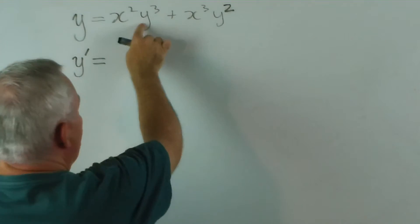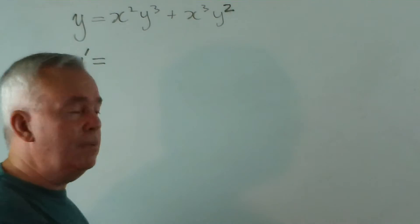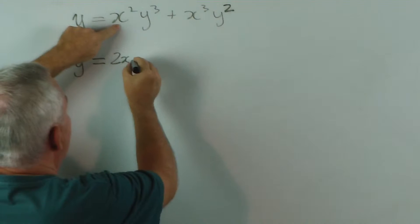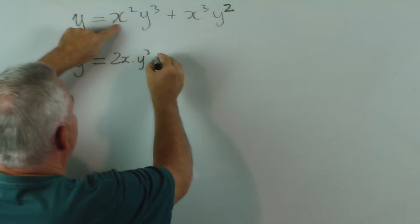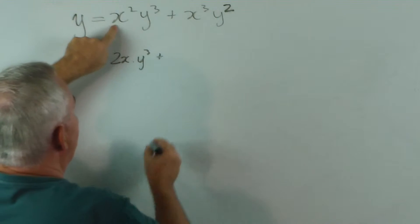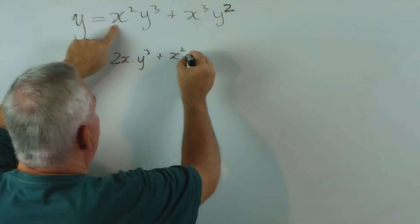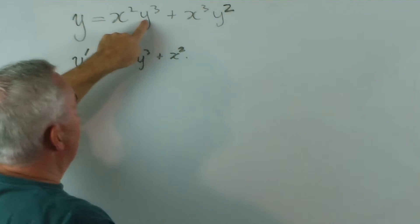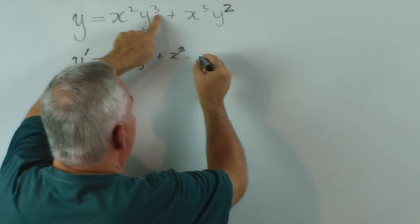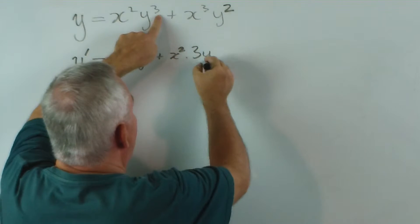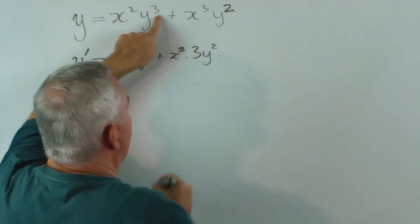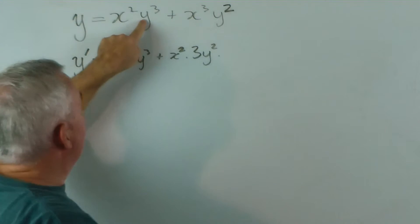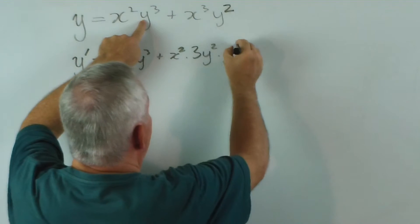Here we have a product, so we have a product rule. We take the derivative of x squared, which is 2x, and leave the y cubed alone. Then we leave the x squared alone and find the derivative of y cubed. The derivative of that power is 3y squared times, and being a chain, we now find the derivative of the y inside with respect to x, which is y dash.